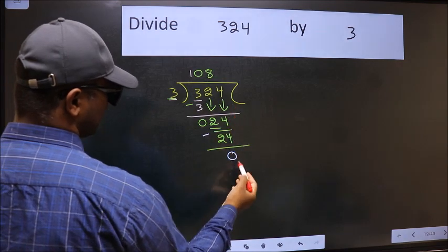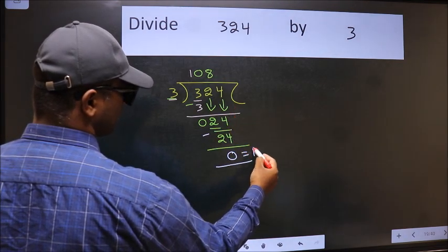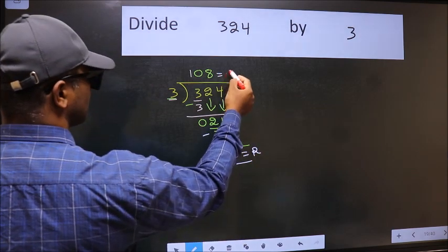No more numbers to bring it down. So we stop here. This is our remainder and this is our quotient.